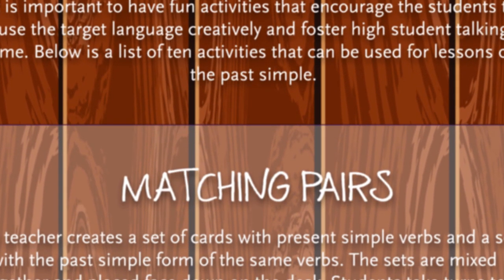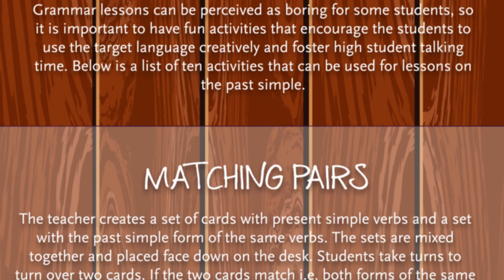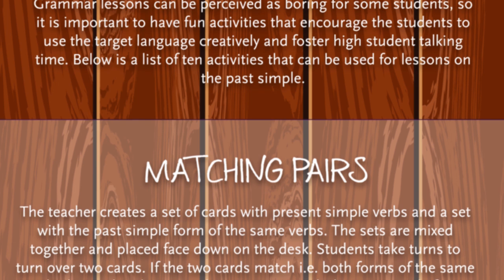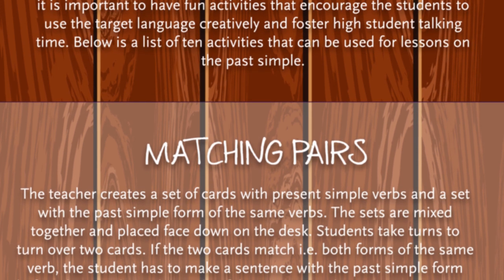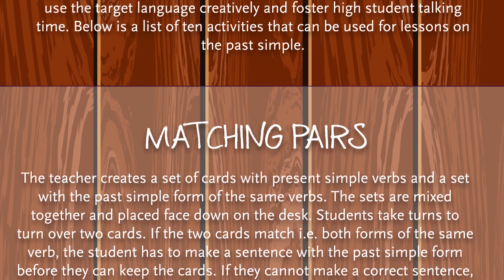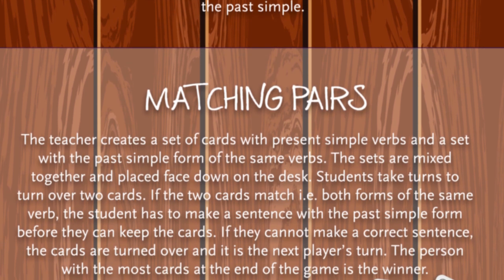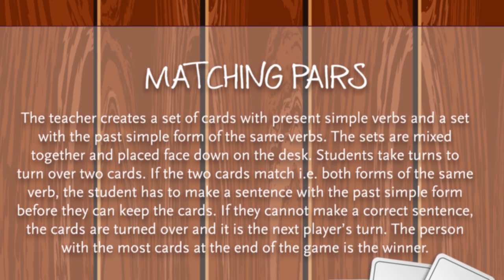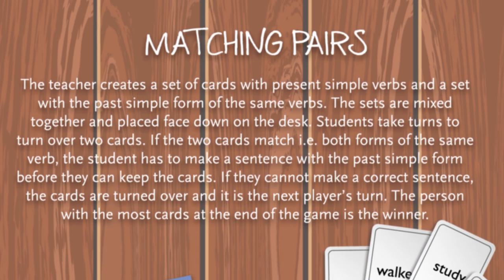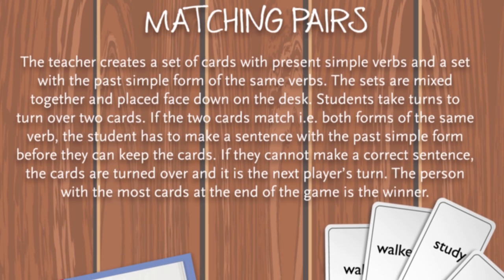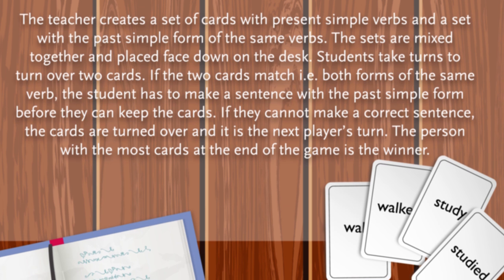Matching Pairs. The teacher creates a set of cards with present simple verbs and a set with the past simple form of the same verbs. The sets are mixed together and placed face down on the desk. Students take turns to turn over two cards. If the two cards match — both forms of the same verb — the student has to make a sentence with the past simple form before they can keep the cards.